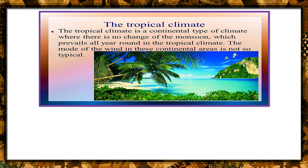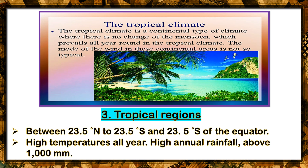The third type of climate is the tropical climate. Tropical regions lie between 23.5 degrees north to 23.5 degrees south of the equator. They have high temperatures all year — meaning you can swim all year round — and high annual rainfall above 1,000 millimeters. The tropical climate has no change of monsoon, which prevails all year round. Our country is actually in the tropical region, so it experiences high temperatures all year round.